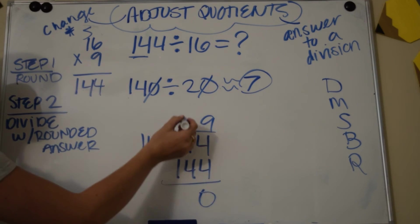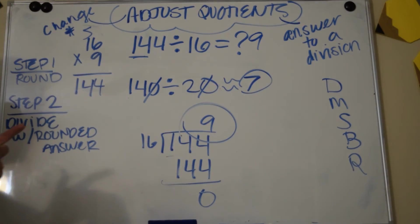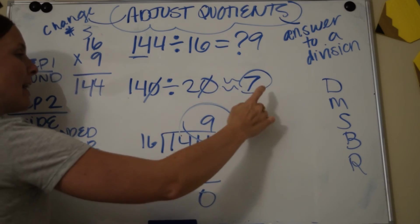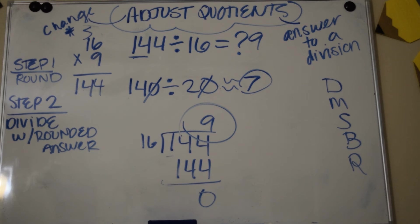And I have zero left over. So the answer to my problem is 9, and I figured that out by rounding and adjusting this quotient. All right you guys, I hope that helps you. This is a pretty big skill to do, so it takes lots of practice. But just remember the steps: first you're going to round to find a compatible number.